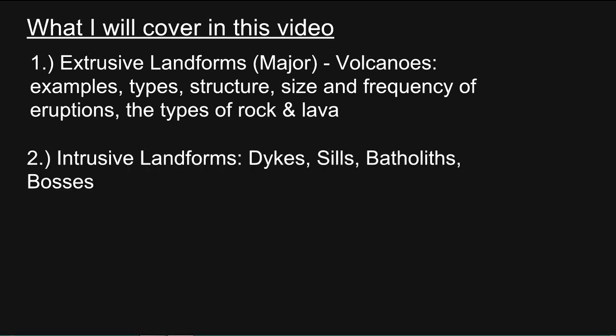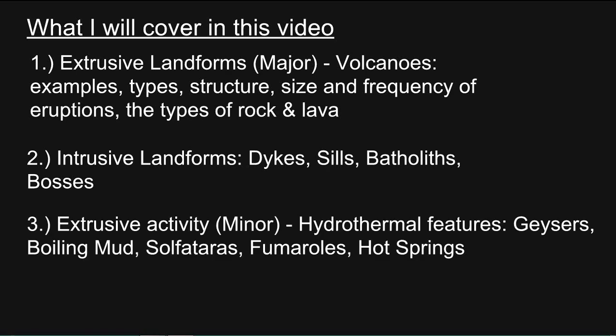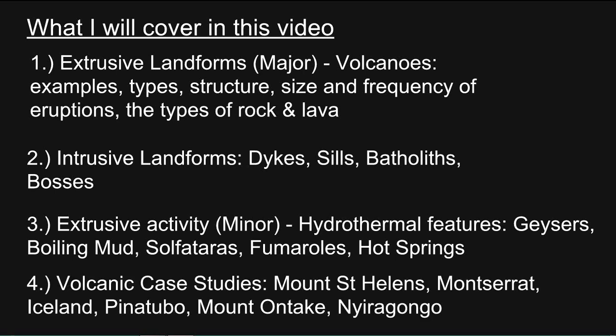Intrusive landforms: dikes, sills, batholiths and bosses. Extrusive activity minor forms: geysers, boiling mud, sulphur turrets, fumaroles and hot springs. And volcanic case studies of Mount St. Helens, Montserrat, Iceland, Pinatubo, Mount Ontake and Nyiragongo, Congo.